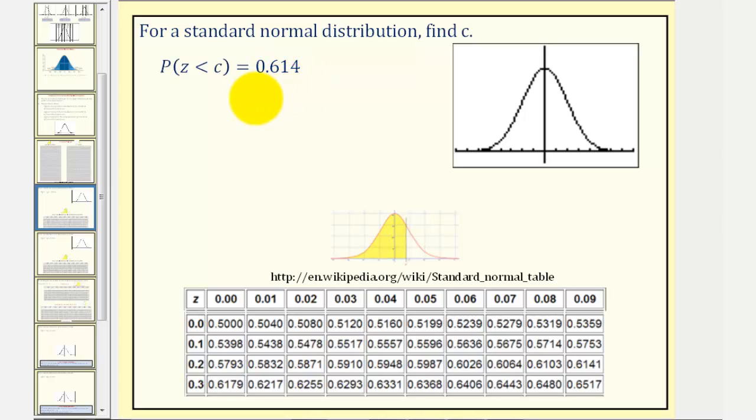Which means if we selected a random data value, the probability that the Z-score would be less than C would be 0.614, or 61.4%.